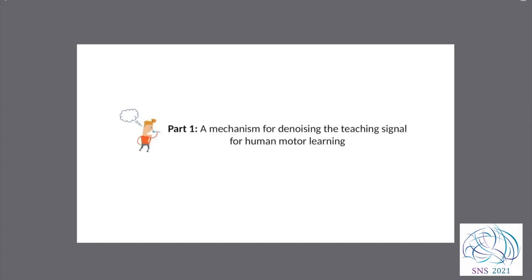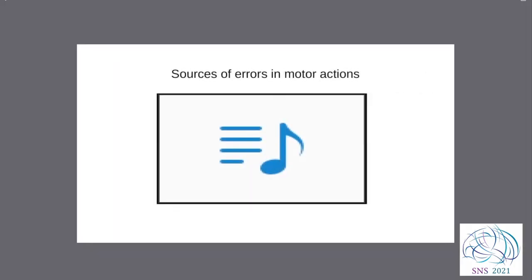I'm going to talk today about new work showing that error signals are refined to an extent that goes beyond what people previously thought happened — and possibly beyond what a lot of people thought might be possible. I'll show some evidence for this. There are a couple parts to the talk, but I'll focus on part one, which is about denoising the teaching signal for human motor learning.